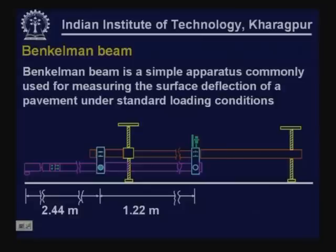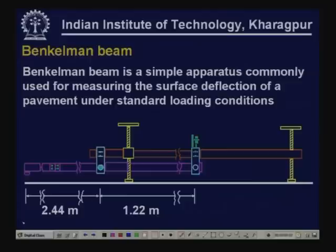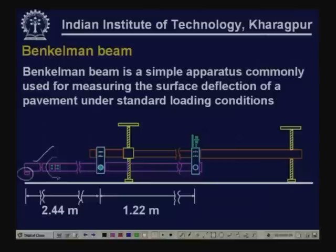The Benkelman beam is a simple apparatus commonly used for measuring the surface deflection of a pavement under standard loading conditions. A schematic arrangement is shown here. The probe point rests on the pavement surface at the point where deflection is being measured. Since the beam is very long, it is cut in several places — it can be dismantled for transport and reconnected for use, achieving a full practical length.